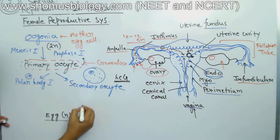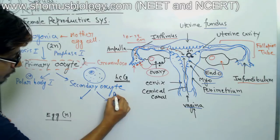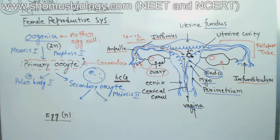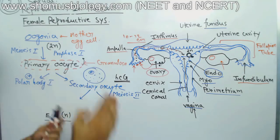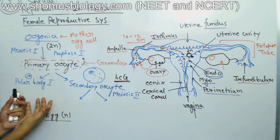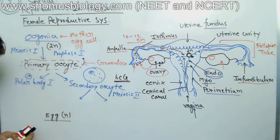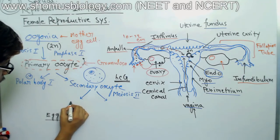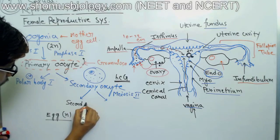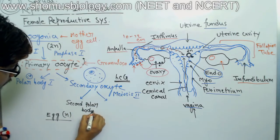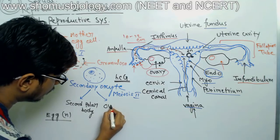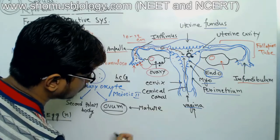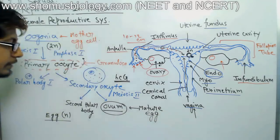At this stage, the secondary oocyte undergoes the second round of meiosis, or meiosis 2. The polar body will not divide further as it is not beneficial. The secondary oocyte produces a second polar body and the ovum — the mature female gamete or egg. This is the mature egg.